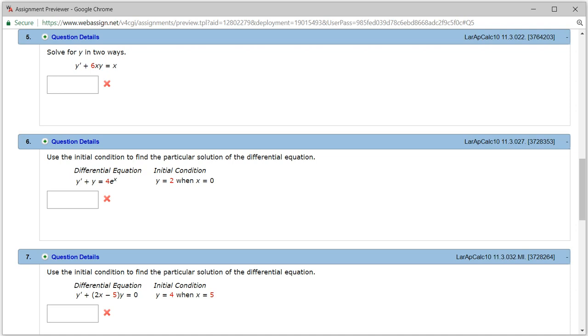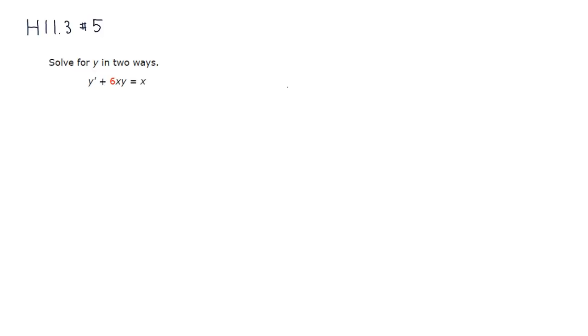All right, let's look at the homework 11.3, problem number 5. Let's solve this first order linear equation. So this is already in the standard form, so we know that we can identify P and Q right away.